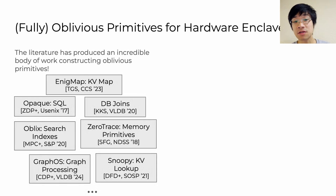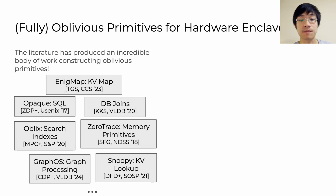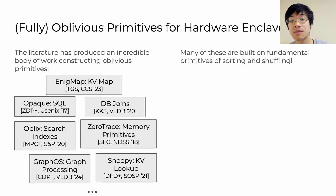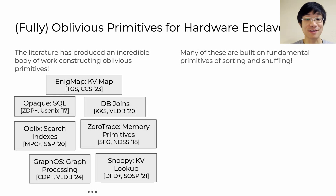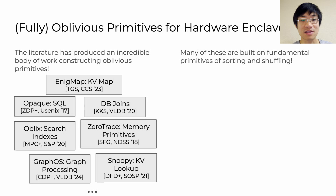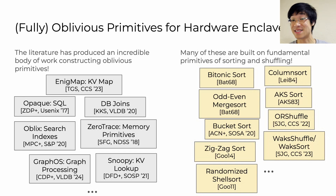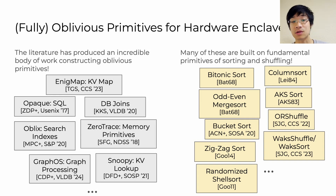We have oblivious primitive constructions on everything from search indexes to key-value lookup and graph processing and so on. Similar to their non-oblivious counterparts, these primitives often rely on fundamental building blocks. The most fundamental of them all is sorting, as well as the closely related problem of shuffling. There's a bunch of work in this field, including Batcher's very old 1968 paper to recent shuffling works that came out in CCS '22 and '23.